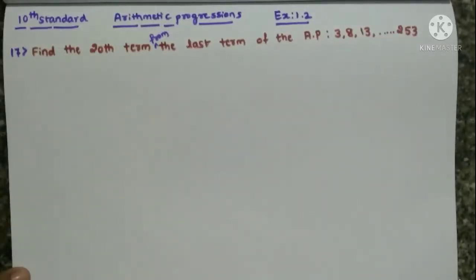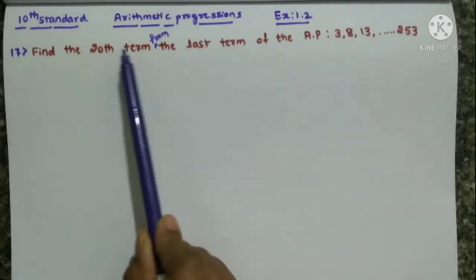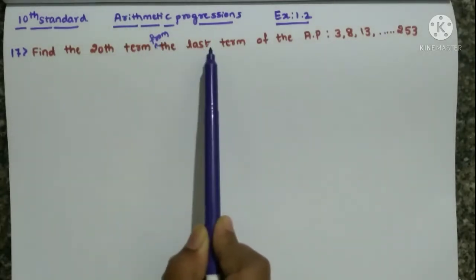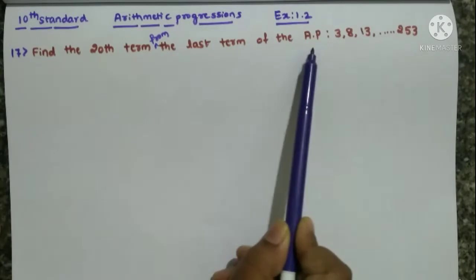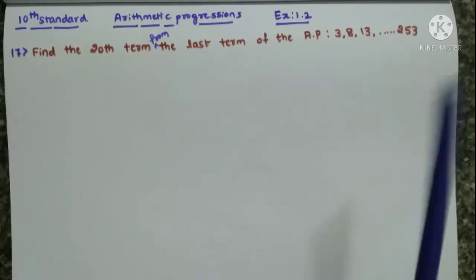Hello children, in this video I am going to explain 10th standard arithmetic progression exercise 1.2, 17th term. We will see the question. Find the 20th term from the last term of the AP: 3, 8, 13, ..., 253.